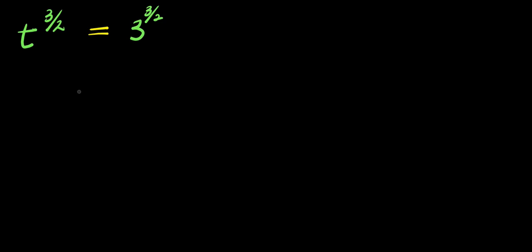Hello, how to solve this exponential problem. This is t to the power of 3 over 2 equals 3 to the power of 3 over 2. We are solving for all values of t that satisfy this equation.